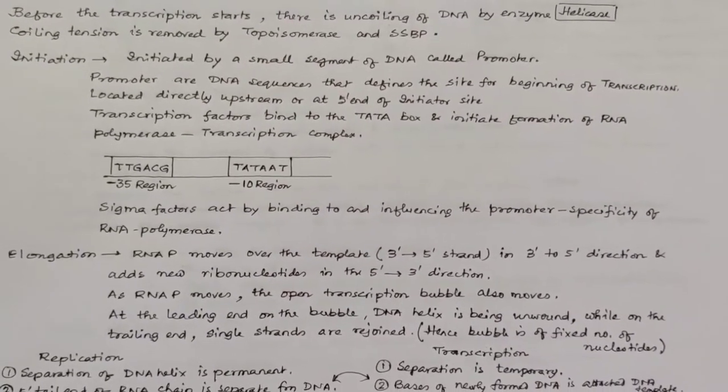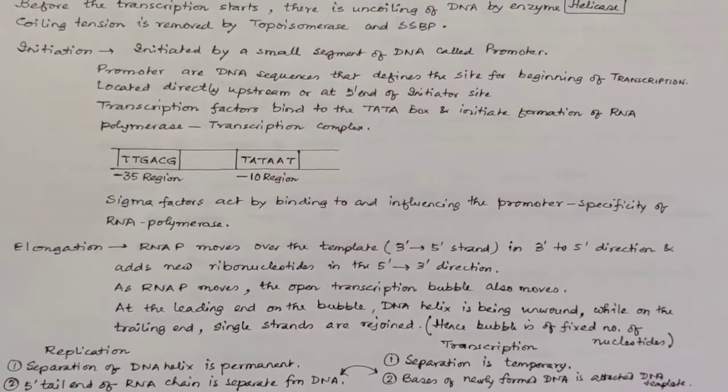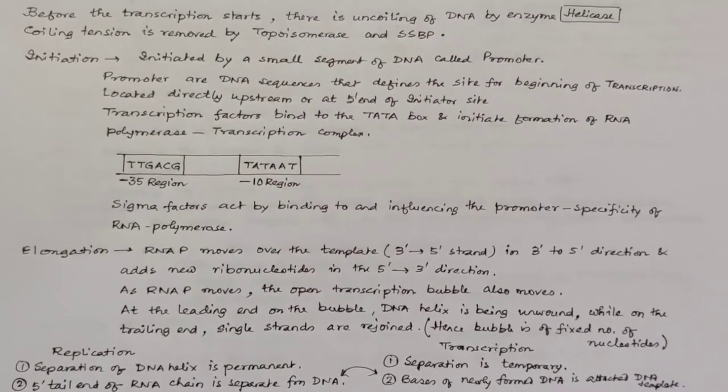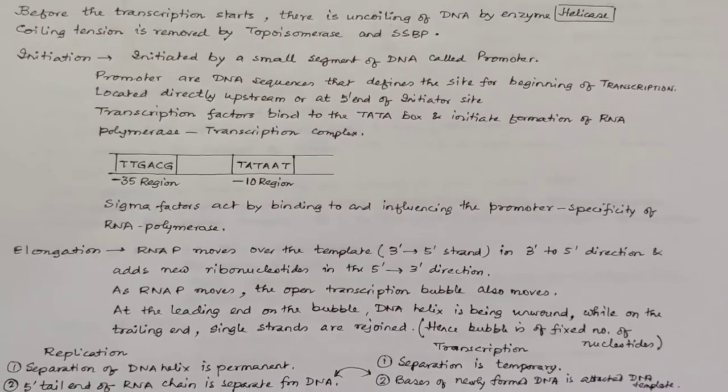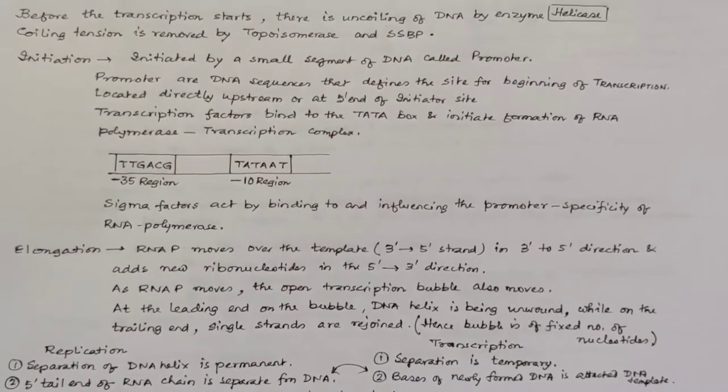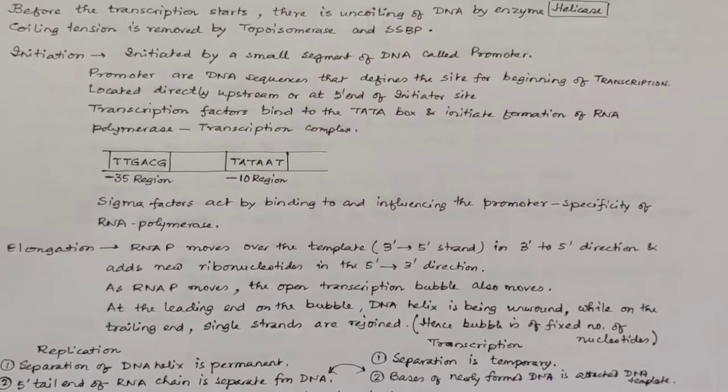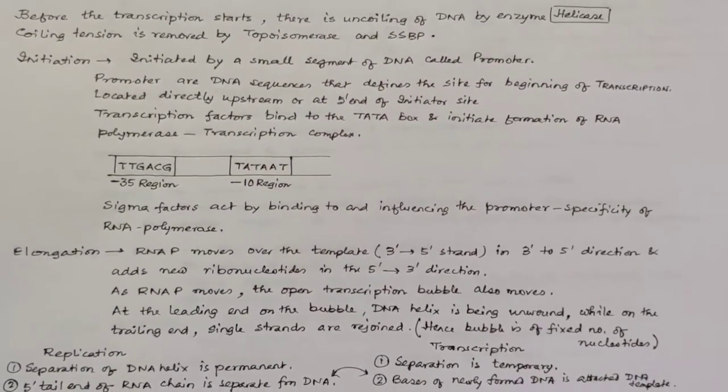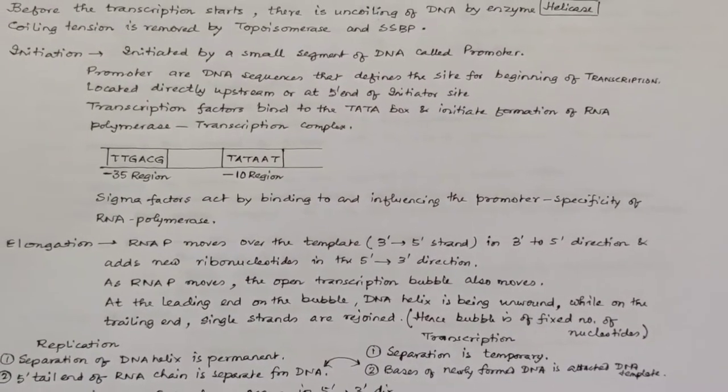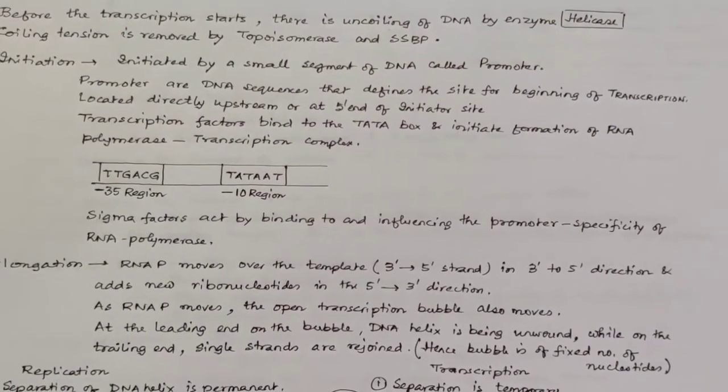Here you are seeing the picture of the promoter. Promoters are DNA sequences that define the site for beginning of transcription. It is located directly upstream or at the 5' end of the initiator site. Transcription factors bind to the TATA box, which is the region having the bases TATAAT. It initiates the formation of RNA polymerase.